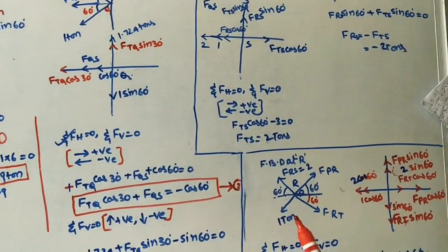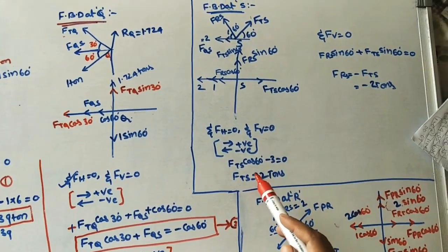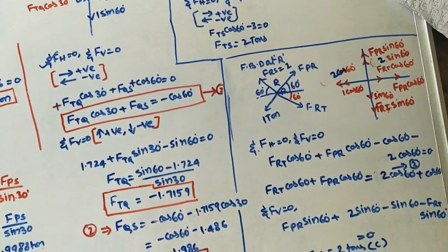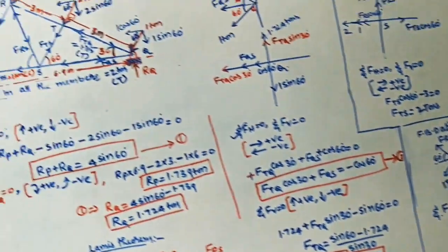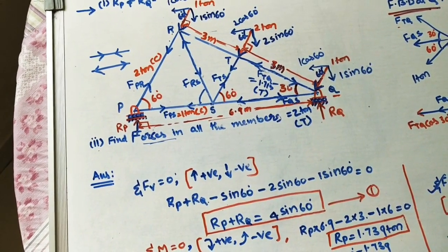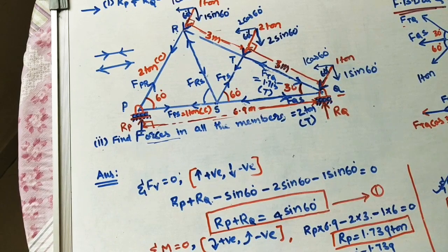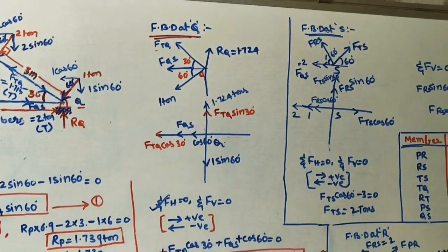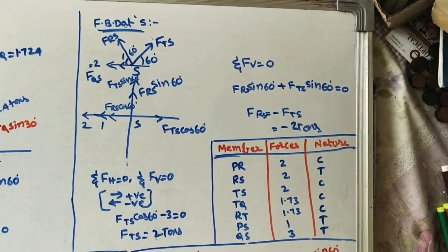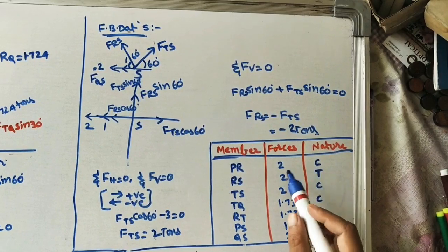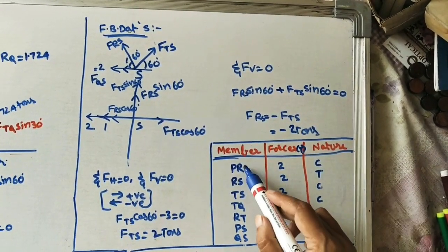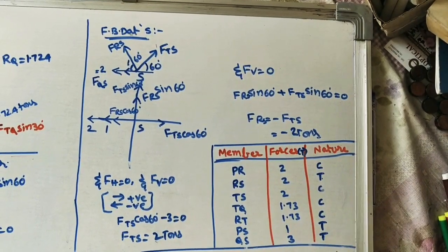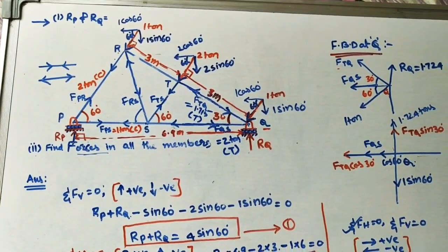Finally, take the FBD at point R using the previously found values. Substitute known values (Frs = 2 tonnes, etc.) to find the remaining members Fpr and Frt. After finding all member forces, compile a tabular summary listing each member, the force in tonnes, and the nature — C for compression or T for tension. This completes the frame/truss problem.